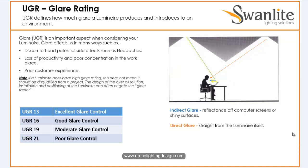If the luminaire you selected for your project is very glary — for example it has a glare value of 25 or 26 — you can still use it, but you need to adjust the location, the tilting, and maybe the height of the luminaire so you will get a good glare value.